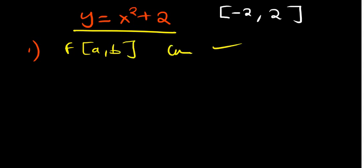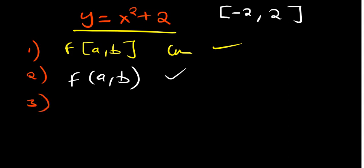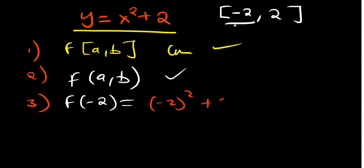The second condition is that it should be differentiable on the open interval (-2, 2), which is also true because we can find the derivative of this function at any point between -2 and 2. That is also met. For the third condition, f(a) should equal f(b). We start with f(-2) = (-2)² + 2 = 4 + 2 = 6. Then f(2) = (2)² + 2 = 6 as well.